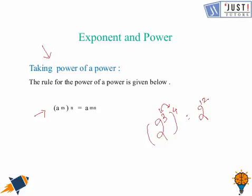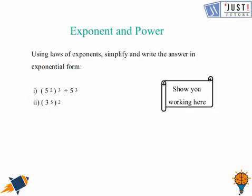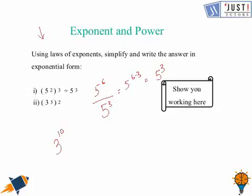Now we move ahead and look at some questions related to this. This is 5 to the power 2, whole raised to the power 3. That would be 5 raised to the power 3 times 2, which is 6, divided by 5 raised to the power 3, which equals 5 raised to the power 6 minus 3, which equals 5 raised to the power 3. The next has base 3, with 5 times 2 which is 10, so the answer is 3 raised to the power 10.